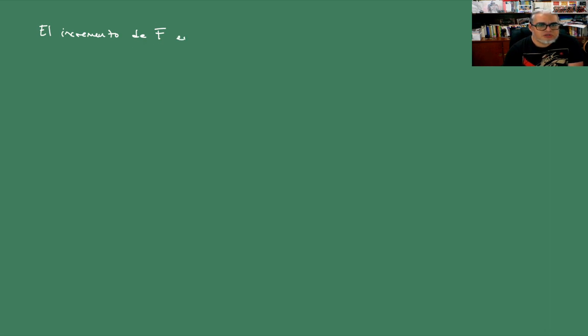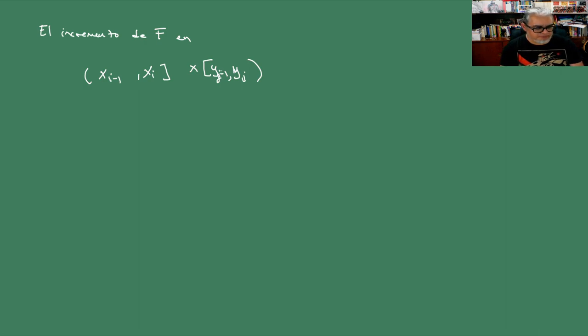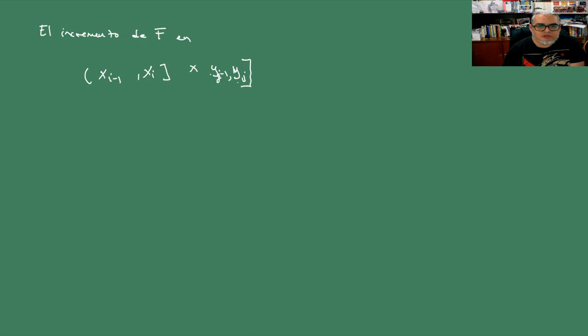El incremento de nuestra distribución en el rectángulo (X_{i-1}, X_i] × (Y_{j-1}, Y_j] — este es el mismo tipo de Boreliano, va cerrado por acá y abierto de este lado.